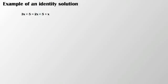The next example we're going to look at is an example of an identity solution. So here I have 3x plus 5 equals 2x plus 5 plus x. So I'm going to leave the left hand side the same here. But when I focus on the right, I see I have 2x plus x. That gets me 3x plus 5.